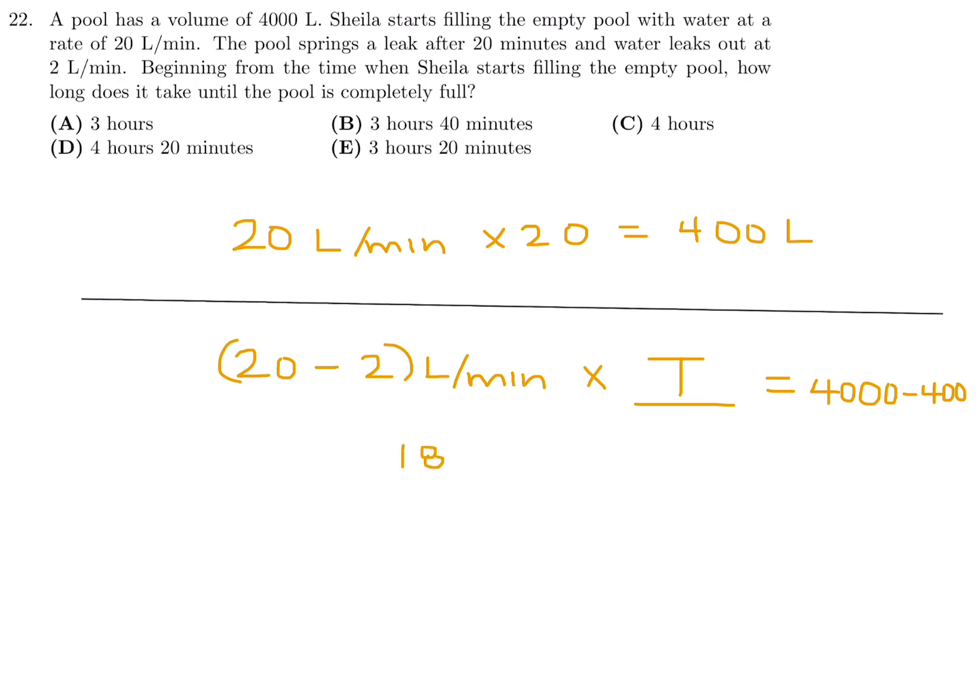This becomes 18 liters per minute times some time, and that has to equal 3,600. If you divide 3,600 by 18, you get 200 minutes. Initially we had 20 minutes when there was no leak. Now we have an additional 200 minutes. So the total is 220 minutes. We just have to convert 220 minutes to hours and minutes, and that's 3 hours and 40 minutes. Number 22, the answer is B.